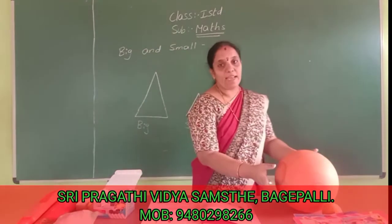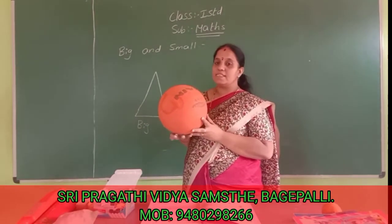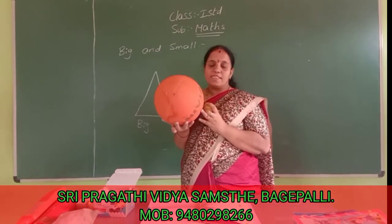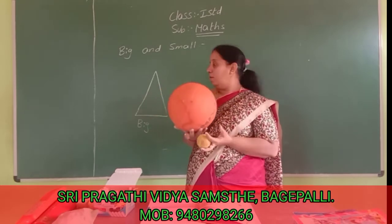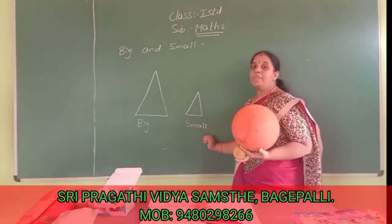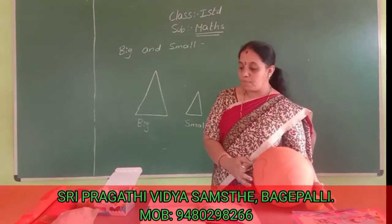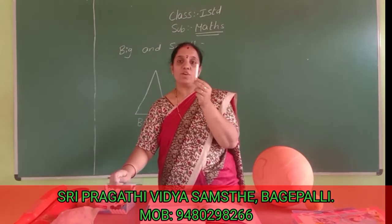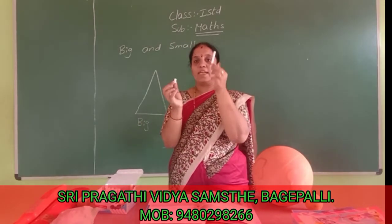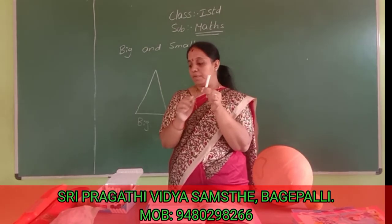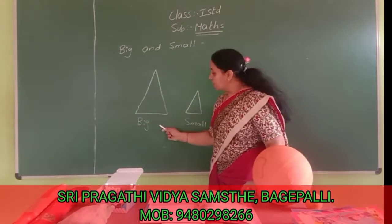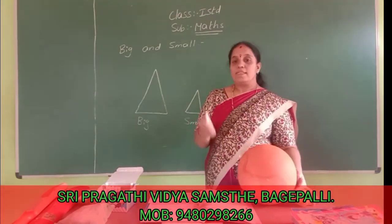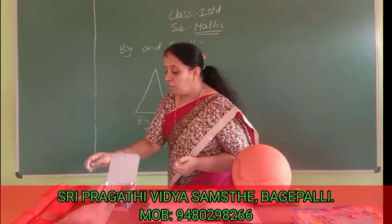Now I am giving you another example. See here — what is this one? This is a ball. What is this one? This is also one ball. This is a big ball and this is a small ball. This is a big triangle and this is a small triangle. This is a big chopstick side and this is a small chopstick side.